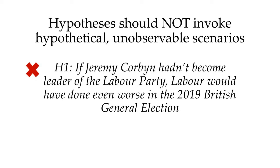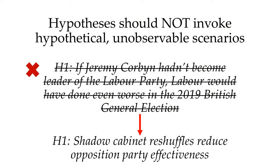Other hypotheses that you'd have a hard time testing are those that assert something about hypothetical, unobservable situations. For instance, a bad hypothesis could be: 'If Jeremy Corbyn hadn't become leader of the Labour party, Labour would have done even worse in the 2019 British general election.' That's not falsifiable because you can't rerun history. However, if you formulated testable hypotheses — for example, that leaders' policy reversals do not diminish their electoral support — and tested those propositions and found they hold true generally, then those findings could help you infer what might have happened if Corbyn hadn't led Labour in 2019. But that would be part of your discussion, not a hypothesis directly testable in its own right.